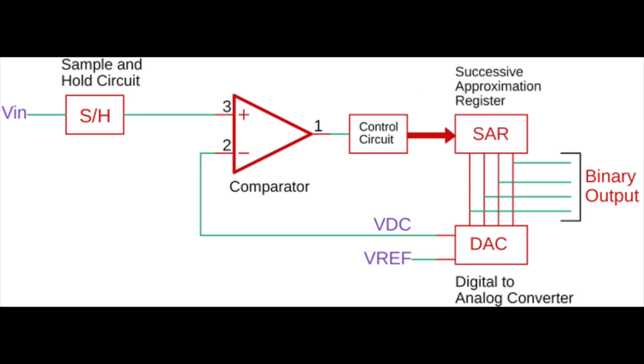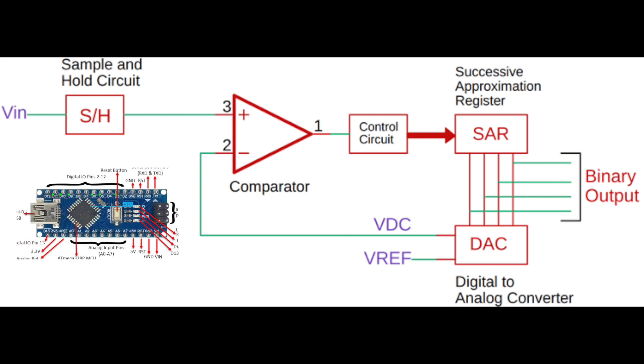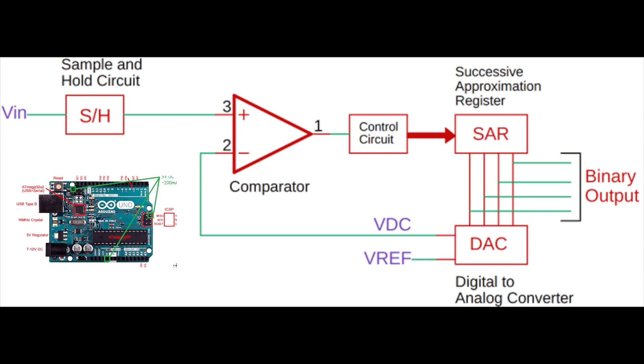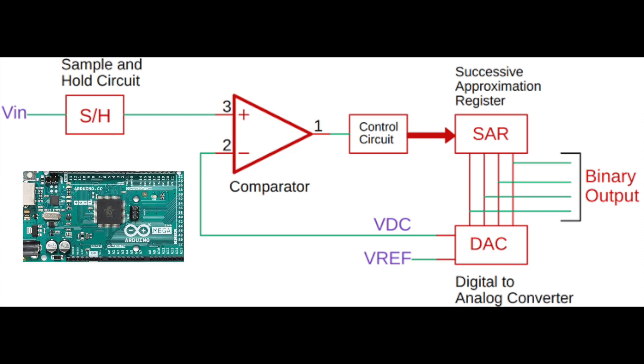This process was repeated several times for the number of bits on a binary output. For most basic microcontrollers, a successive approximation method is used, analyzing an analog input to up to 10 bits.